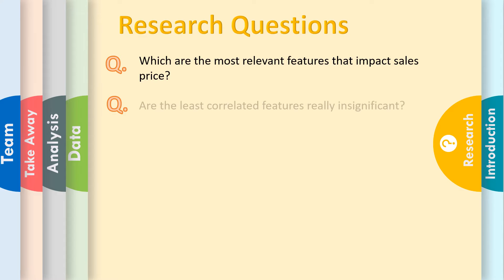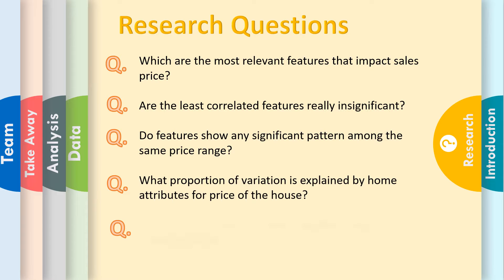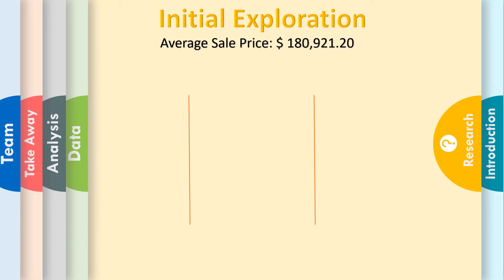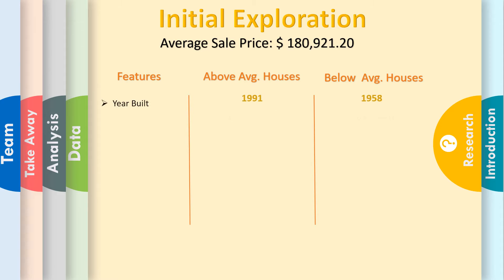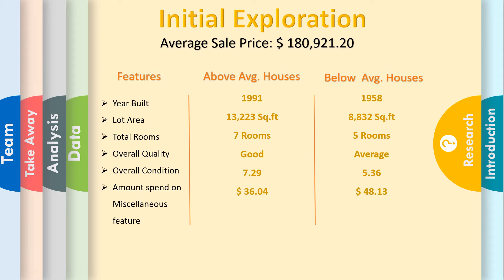The following are the research questions we considered during the project. Initial exploration showed that our houses cost an average of $180,000. The following features show a comparison between above-average and below-average houses.